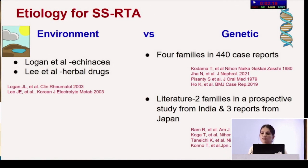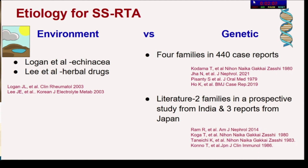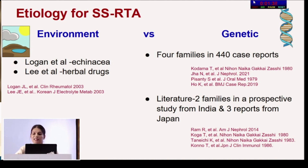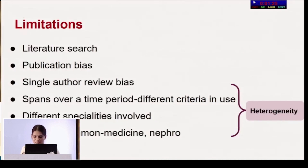Regarding etiology, Sjogren's RTA cases are predominantly from Asia. Some attribute this to oriental medicine or herbs, but if that were the cause, rheumatoid arthritis and lupus patients would also present with RTA. Only two patients reported herbal exposure. Interestingly, in four families among the 440 case reports, other family members also had RTA, and additional prospective studies from India and Japan report familial clustering of Sjogren's syndrome with renal tubular acidosis, suggesting a possible genetic component.